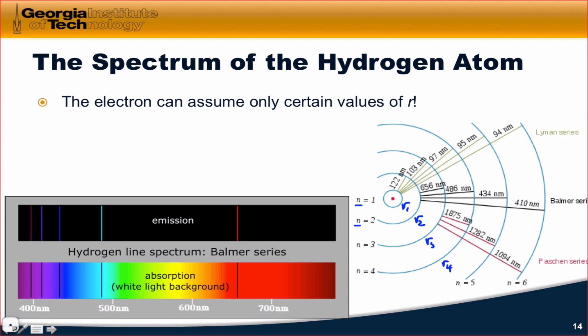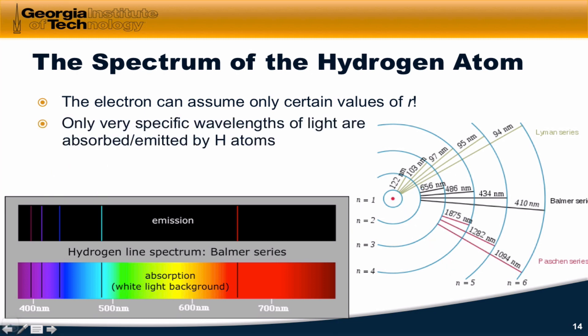The lines in the visible are part of the Balmer series, and all of these represent transitions to the n equals 2, or the r2 level. We've got 656, that's about red, 486, which is the bright blue, 434, which is the darker blue, and then 410 out here. So only very specific wavelengths are emitted or absorbed by hydrogen atoms.